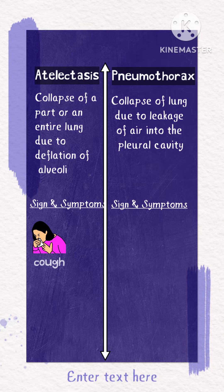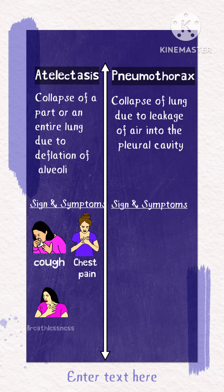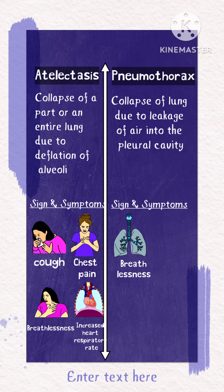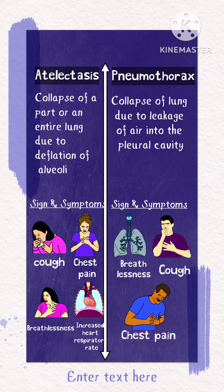The signs and symptoms of atelectasis include cough, chest pain, difficulty in breathing, and increased heart rate and respiratory rate. Pneumothorax causes sudden breathlessness, dry cough, and stabbing chest pain which increases with inhalation of air.